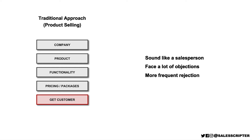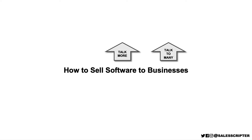Prospects will then give you objections and try to get rid of you. And when you face more objections, you're going to have to deal with more rejection on a daily basis. And when your approach is just to try to sell your product to every prospect that you cross paths with, you're more likely to waste your valuable time because you're trying to sell your product to prospects that likely don't need what you sell. We're here to talk about our strategy for how to sell software to businesses, and I want to propose to you to go about it a different way — almost the opposite way.